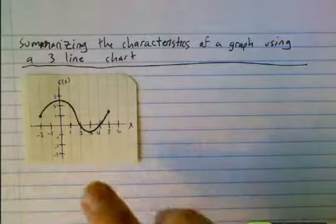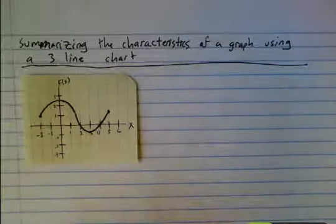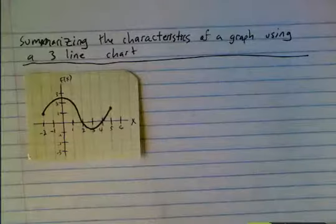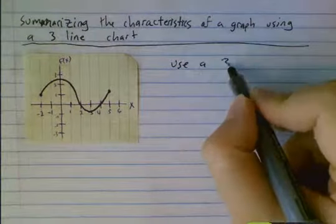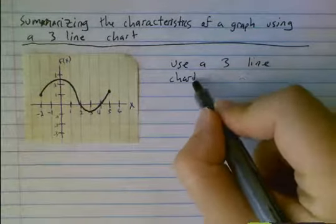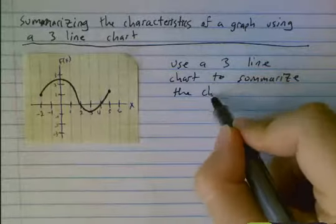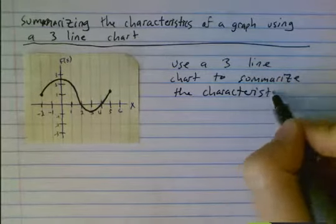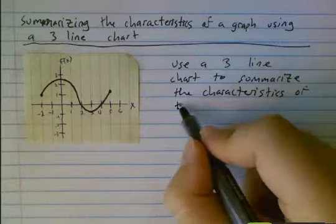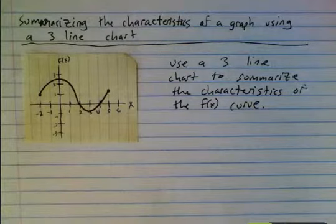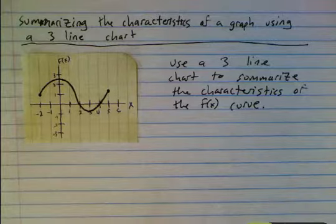Let's just take a little function here — let's call this f of x — and use a three-line chart to summarize the characteristics of the f of x curve. This is going to be a lot easier if we do it in a particular way. The point of this tool isn't super obvious now but it's going to be extremely important for the next lesson.